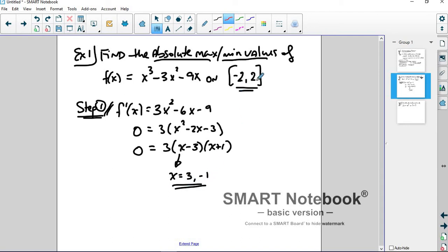What's the first thing you notice here about these critical numbers? One of them is not part of our interval. 3 is not part of our interval. So even though you found it and you need to find all the critical numbers, if there are any that do not fall into the closed interval that you're interested in, then you have to get rid of them. You do not test points that are not in your interval.